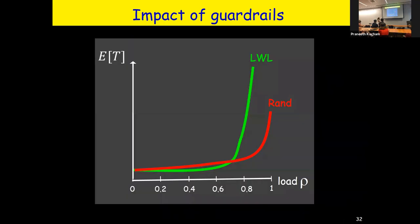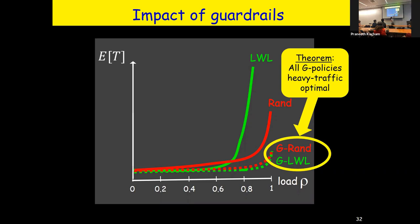Here's a picture showing this. Previously, random was better than least-work-left. With guardrails, guarded RAND and guarded least-work-left are both better — and guarded least-work-left is slightly better than guarded RAND, though they're essentially the same. Both are hitting the single-server lower bound and are heavy traffic optimal. They're very different policies, but once guarded, they all converge to optimal in heavy traffic.